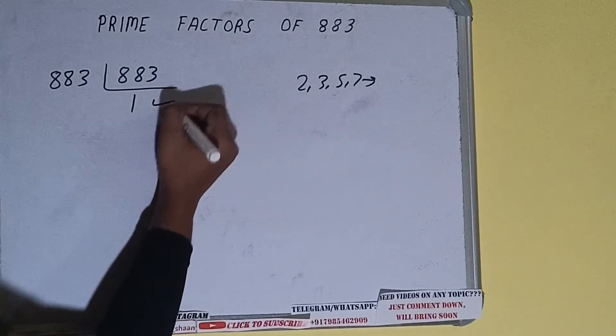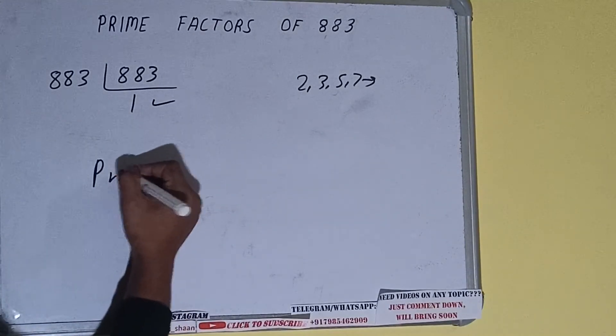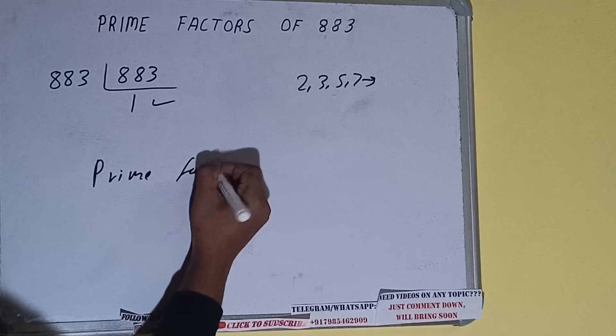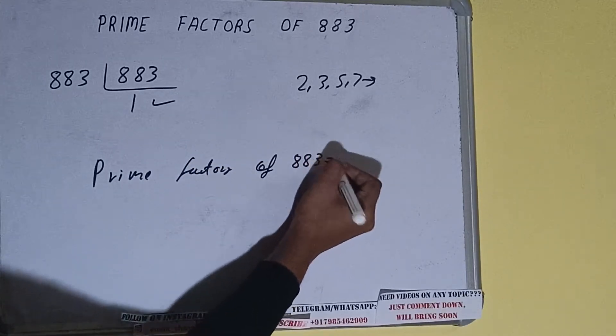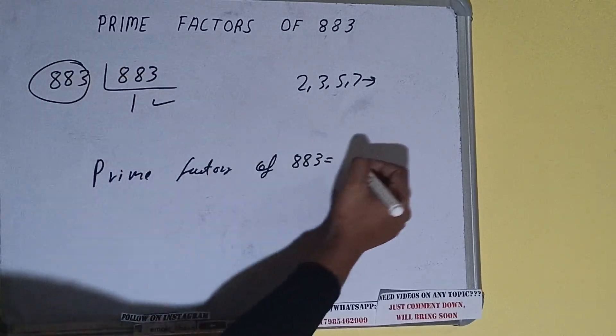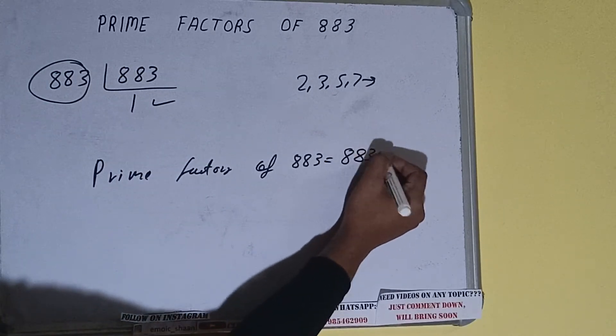Once we get 1, we need to stop and do a last thing that is prime factors of 883 equals whatever we have on the left hand side, that is 883. That will be the answer.